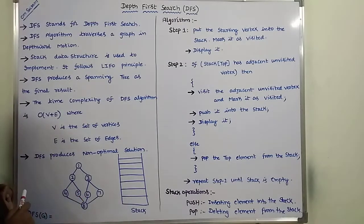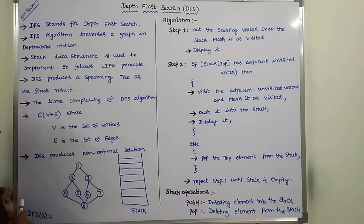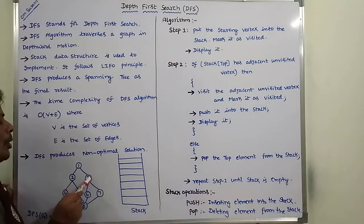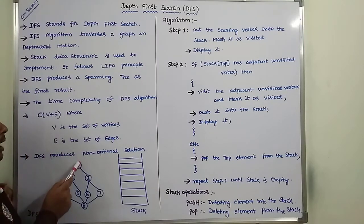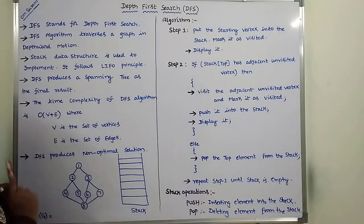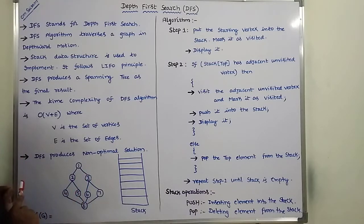What are the adjacent vertices for vertex 6? 3 and 8. Among 3 and 8, vertex 8 is already visited. Only vertex 3 is not visited. So we select vertex 3. What are the adjacent vertices for vertex 3? 1 and 7. Vertex 1 is already visited, so we select vertex 7. What are the adjacent vertices for vertex 7? 3 and 8 — both are visited.